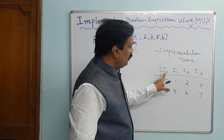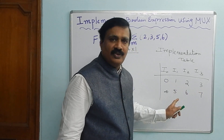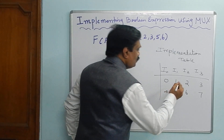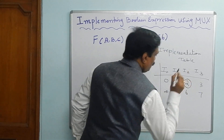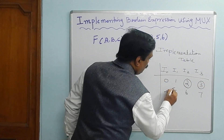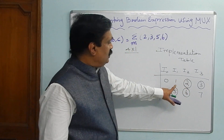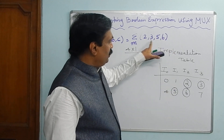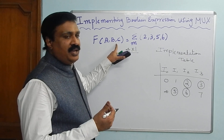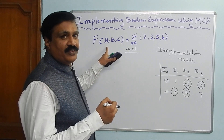You take the 4 inputs and write from 0 to 3 and 4 to 7 in this order. Now you just circle the terms that are present: 2 is present — circle 2; 3 is present — circle 3; 5 is present — circle 5; 6 is present — circle 6. So I have circled 4 terms. Now, 3 variables are there; we can take any 2 variables as select lines and one as an input variable.